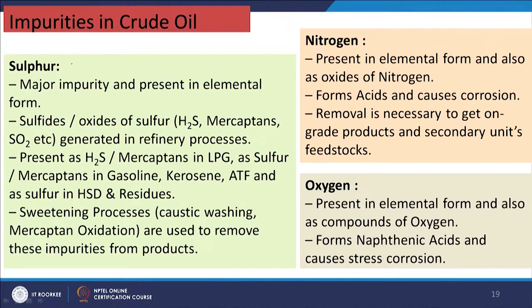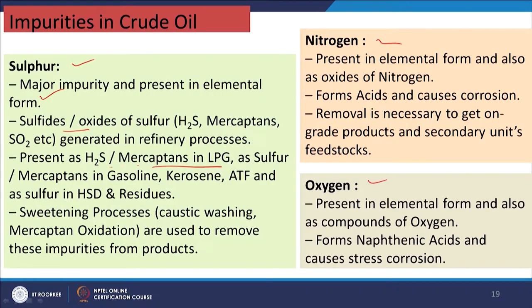There are also impurities in crude oil such as sulphur, nitrogen, and oxygen. Sulphur is present in elemental form or as sulphides and oxides; organic sulphur compounds are called mercaptans. Different products have different types of sulphur: H₂S and mercaptans in LPG, sulphur and mercaptans in gasoline, kerosene, and ATF. To remove sulphur, sweetening processes are used — caustic washing, mercaptan oxidation, etc. Nitrogen is present in elemental form and as oxides of nitrogen; it forms acids and causes corrosion, so removal is necessary.